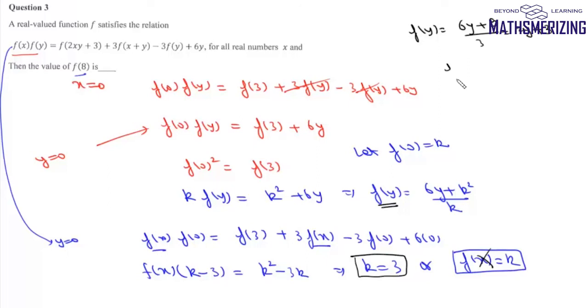Now we find f(8). f(8) = 2(8) + 3 = 16 + 3 = 19. Therefore, the answer is 19.